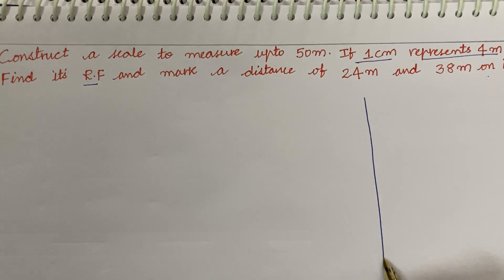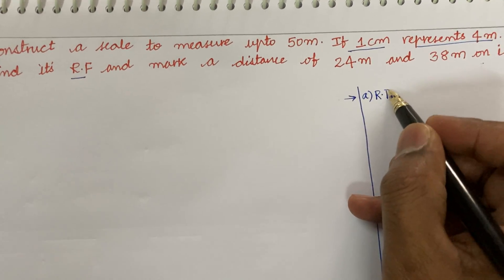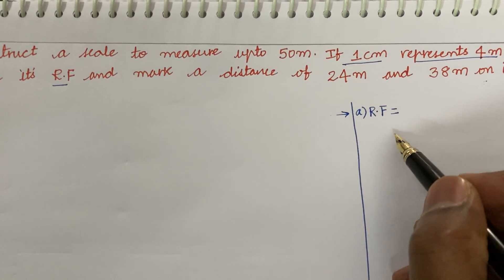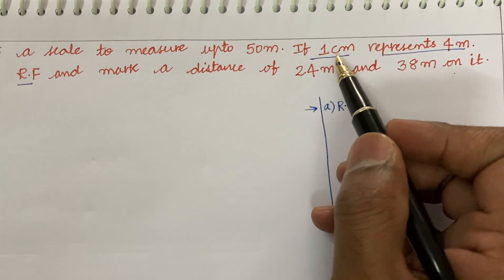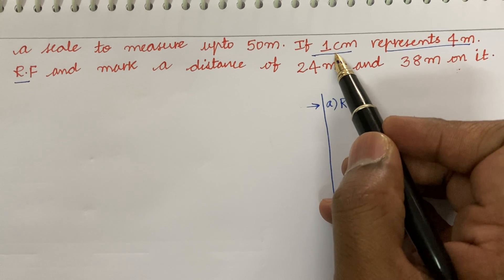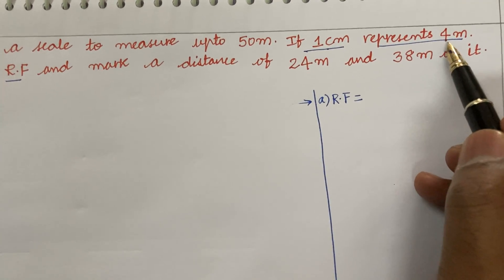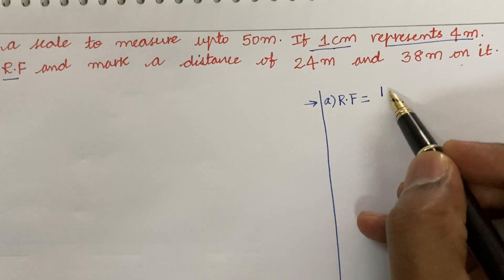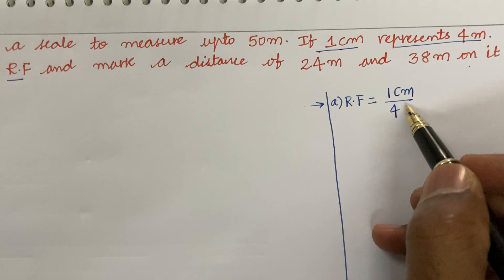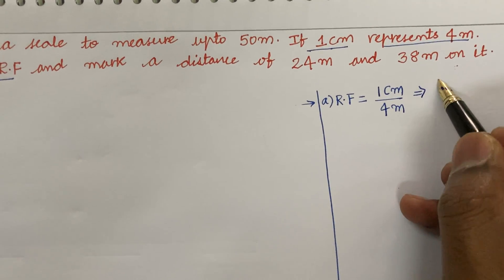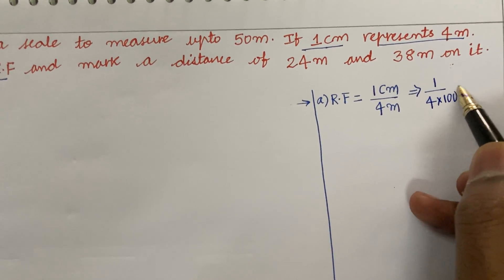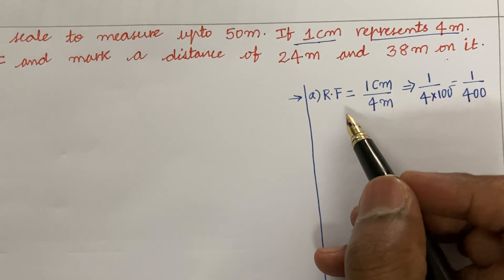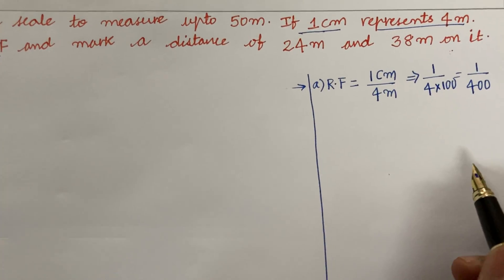As I told you in the earlier video, if RF is missing we are supposed to work it out first. RF, or the representative factor or scale factor, is defined as the ratio of the length of the drawing to the original length. Since one centimeter represents four meters, RF equals one centimeter divided by four meters, which is 1 divided by (4 × 100), giving us 1/400. This is the RF of the given scale.